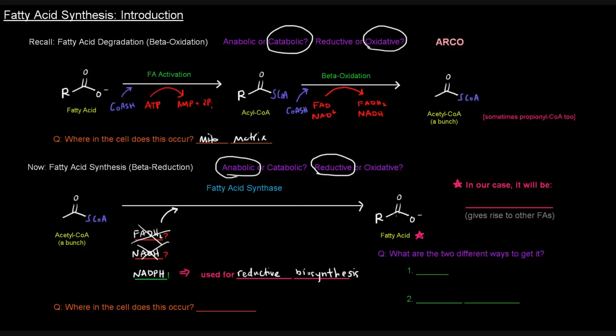Now, the fatty acid that we're going to be making specifically, that we're going to show the steps for, is palmitate, which is the conjugate base of palmitic acid. This is a 16-carbon saturated fatty acid. The reason why we're doing that is because it's commonly made, and once it's made, it's cleaved off of this fatty acid synthase complex and gives rise to other fatty acids.